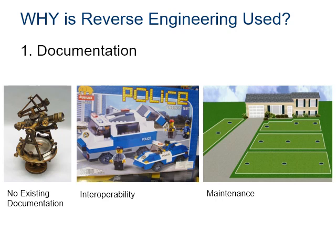Interoperability is when products not manufactured by the same company are able to be used interchangeably, such as Lego and Mega Bloks. The need to reverse engineer may become apparent when the patent on a profitable product expires, allowing competitors to begin manufacturing a similar compatible product. There's also the case of maintenance — say you buy a house with a sprinkler irrigation system installed by the previous owner but they left no documentation. When you discover a leak, it may become necessary to do some digging to better understand the layout of the system.